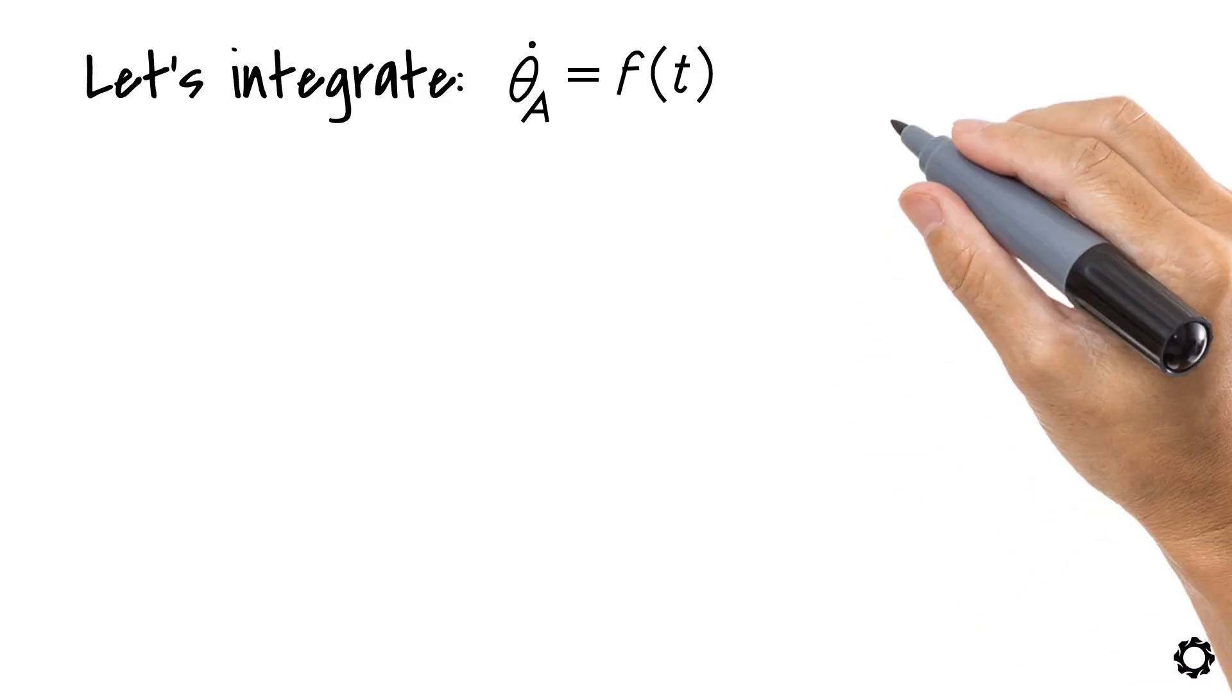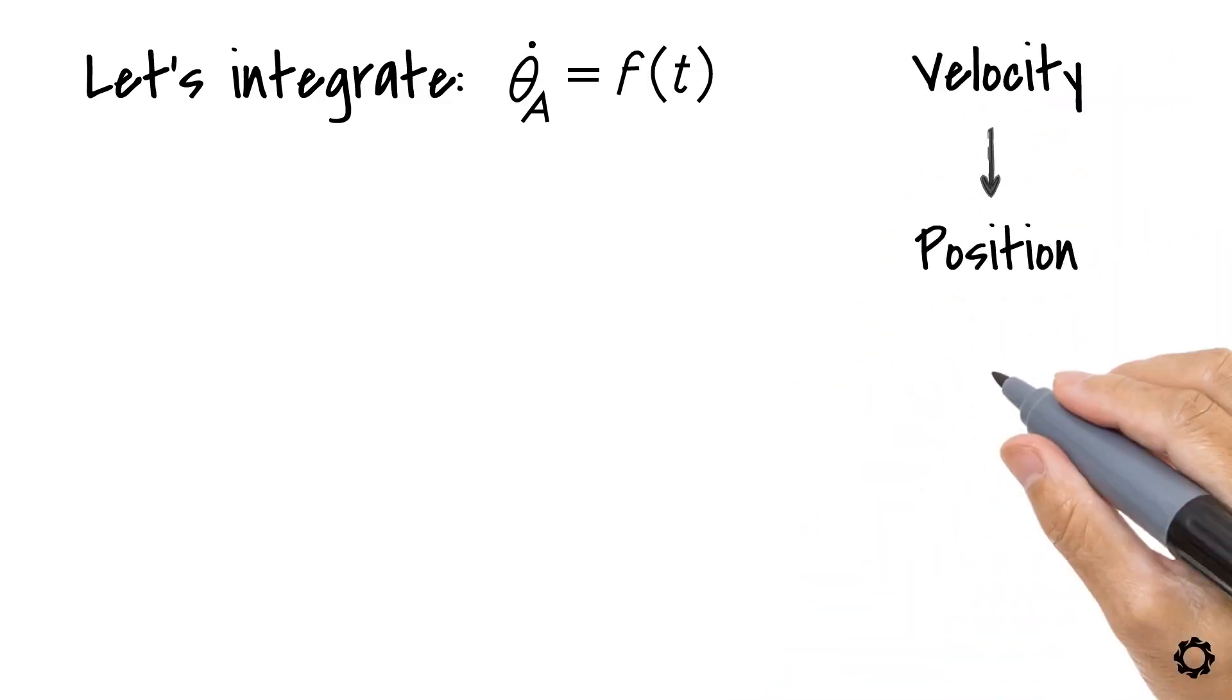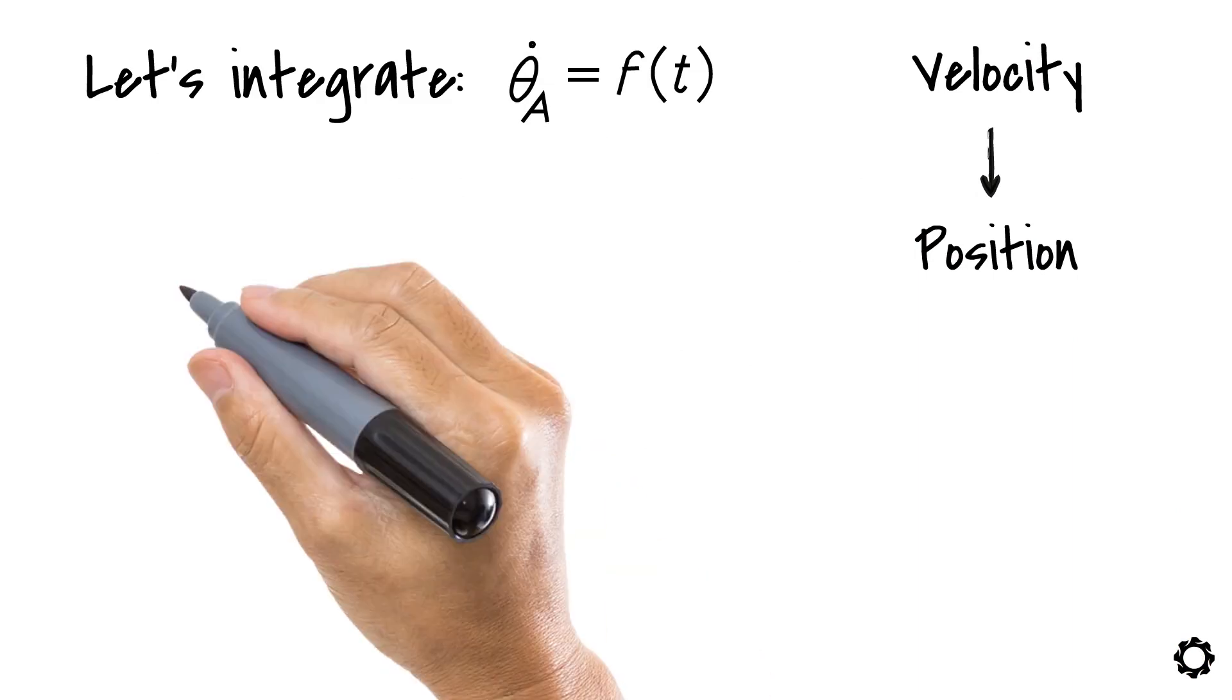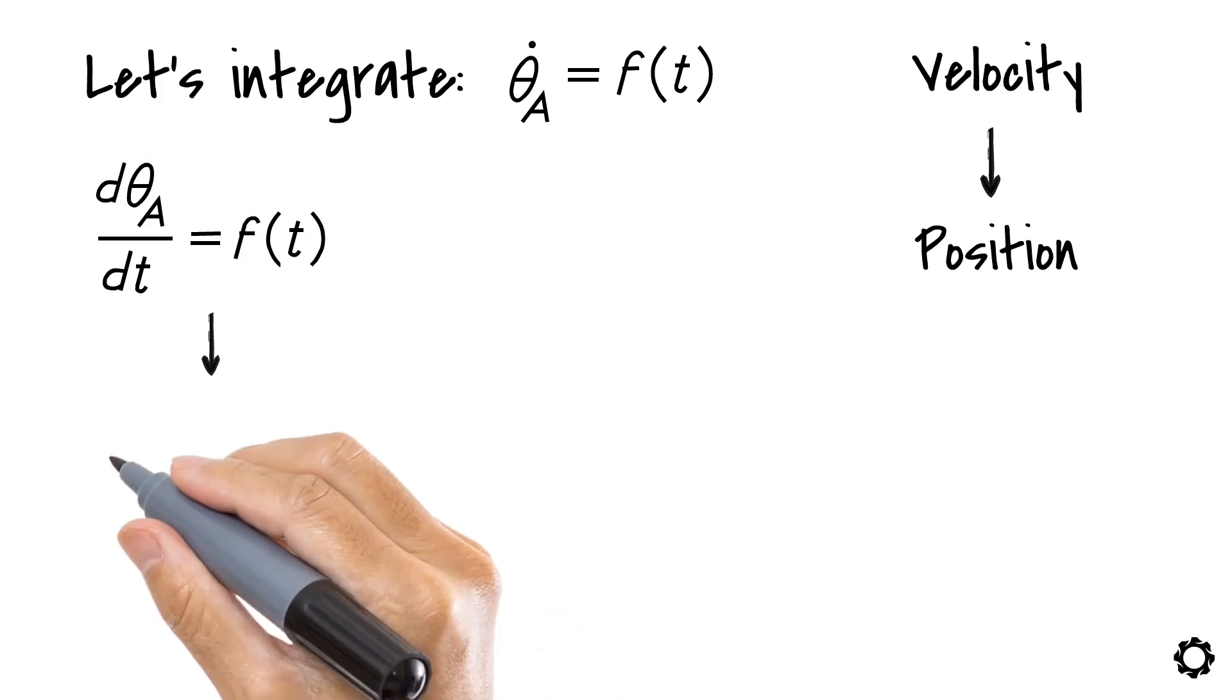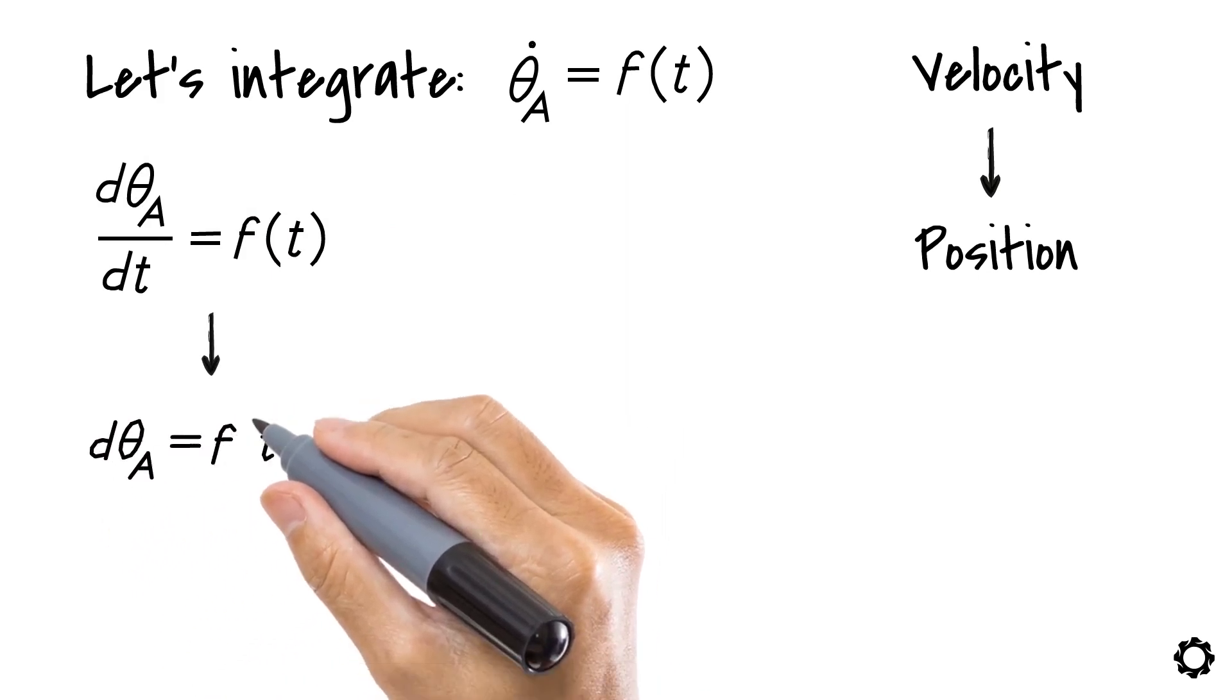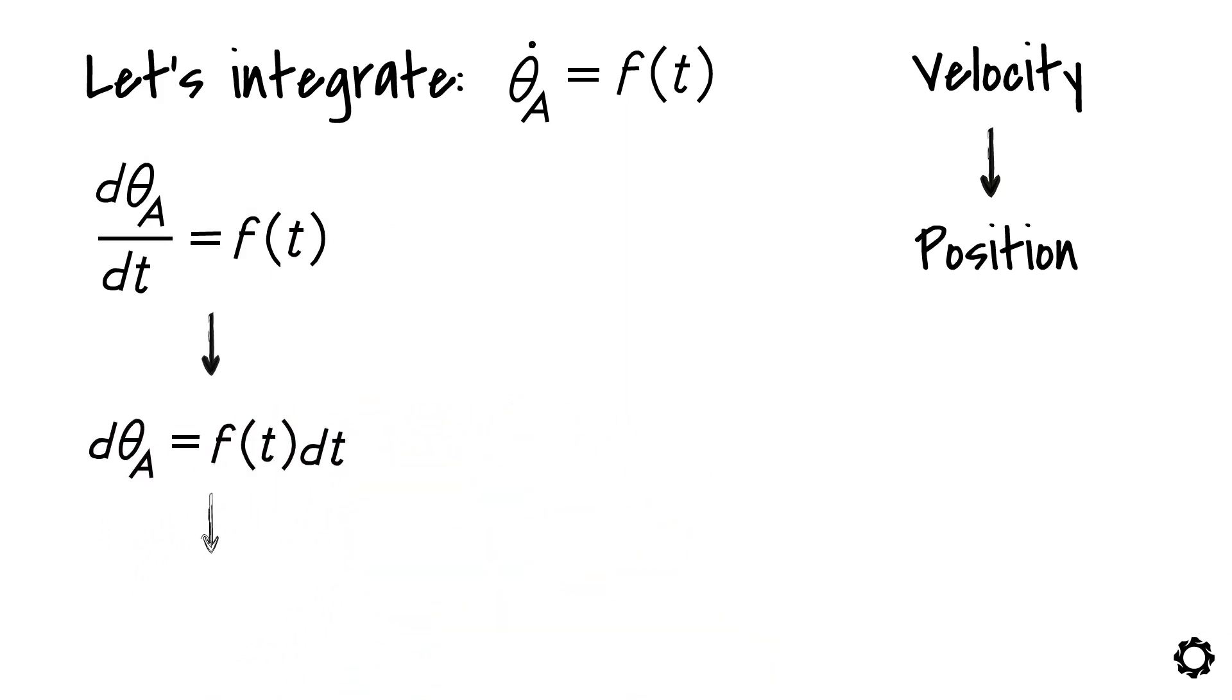To do this change, let's integrate the equation to go from the velocity coordinate to the position coordinate. First, this equation can be written as dθA dt equals f of t. Working it, dθA equals f of t times dt. Working it again, θA minus θA initial equals integration from 0 to t of f of t times dt.